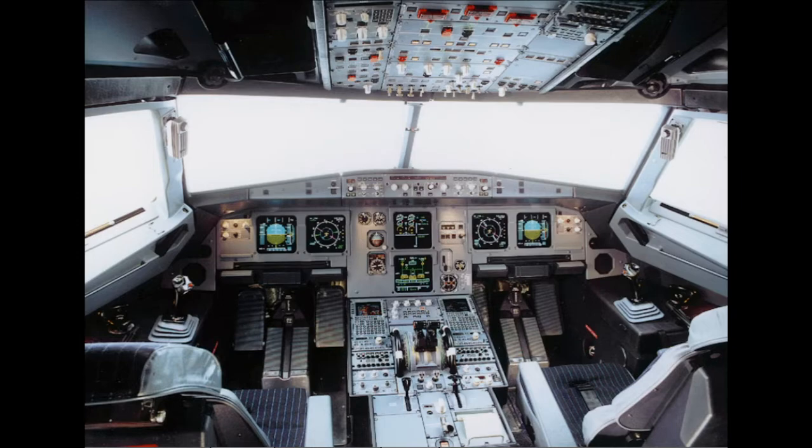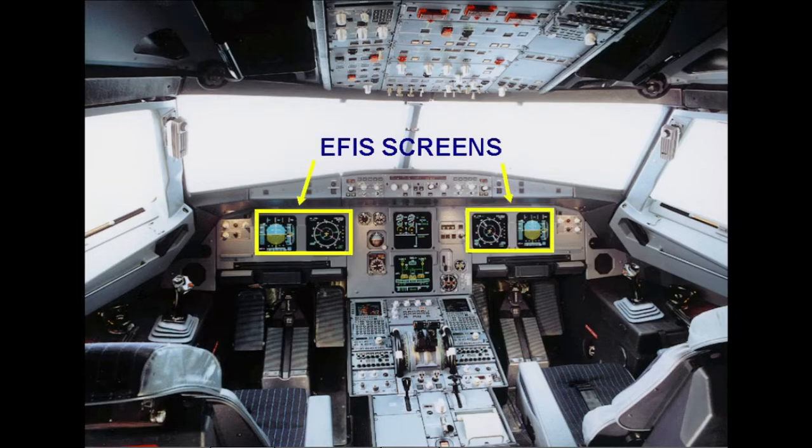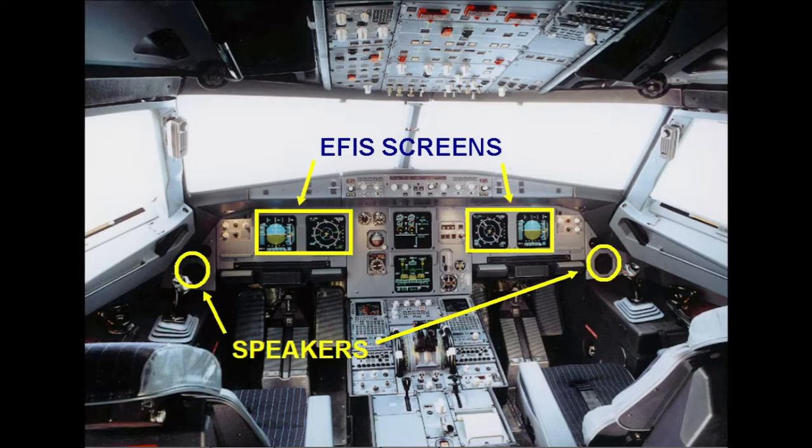The components of the TCAS system are the flight instrument screens, which are used to display target location and avoidance commands, two loudspeakers mounted beside the instrument panel, and a control head located on the center instrument console.